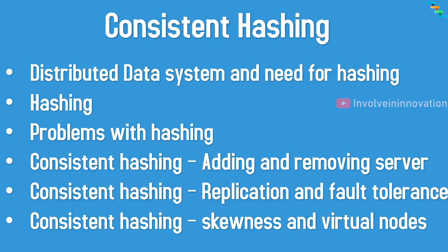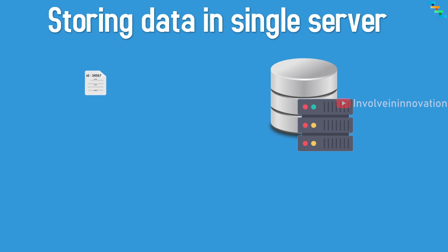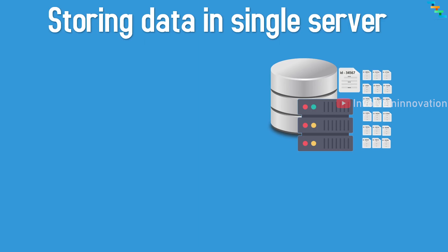Before seeing about distributed systems, let's see how data storage worked 15–20 years back. Life was very simple at that time because we had only one centralized data server — one server getting all requests and giving responses back to the user, and only one centralized data store. So data storage was not a problem.